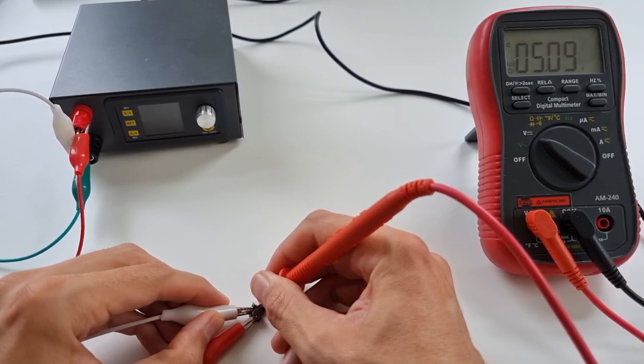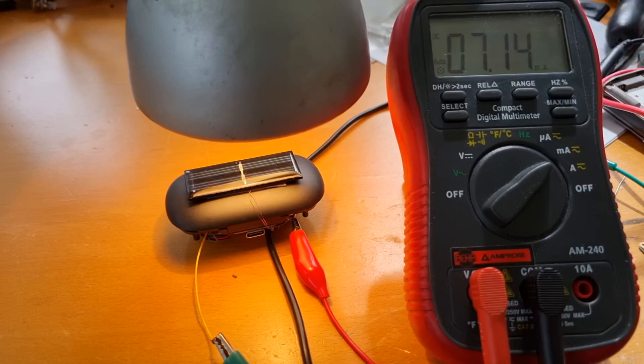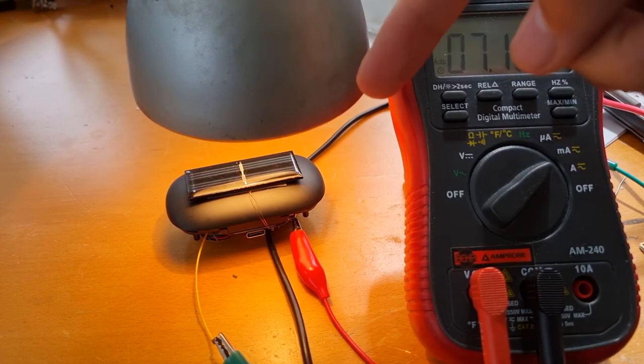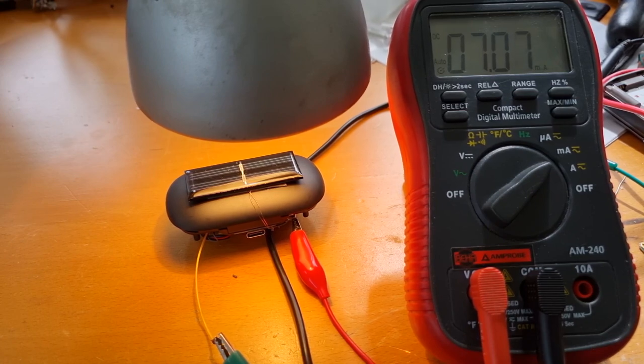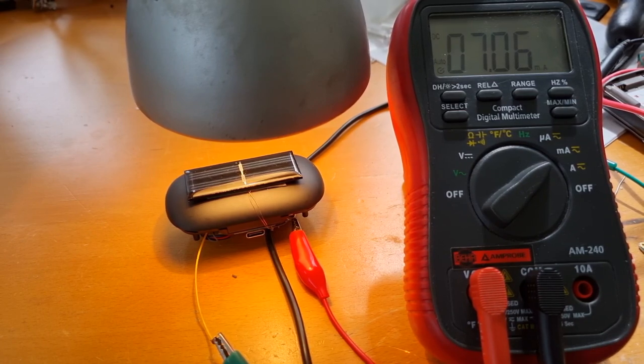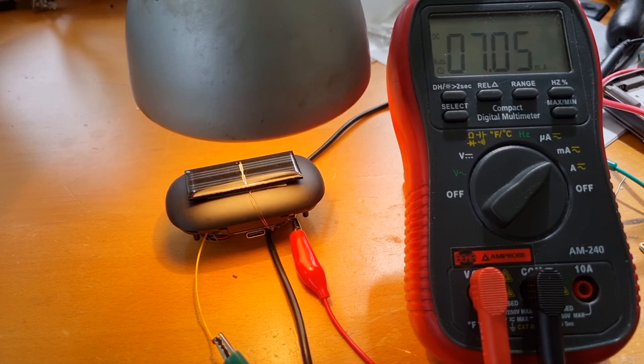All right, so this ugly rat's nest is working, time to install it inside of the enclosure. Here we can see the setup charging the battery at seven milliamps simply coming from this lamp here. This is also roughly equivalent to a sunny day, I tested the setup on a sunny day in the sun and this also gave around about seven milliamps which is quite decent.